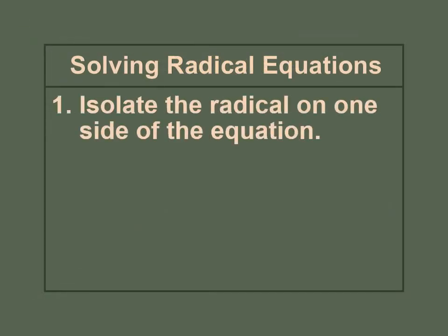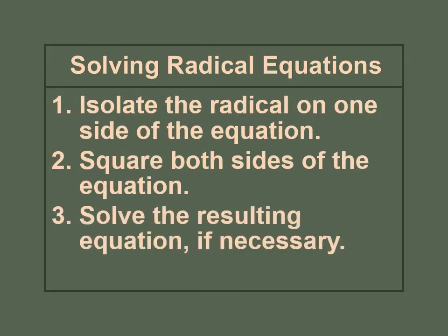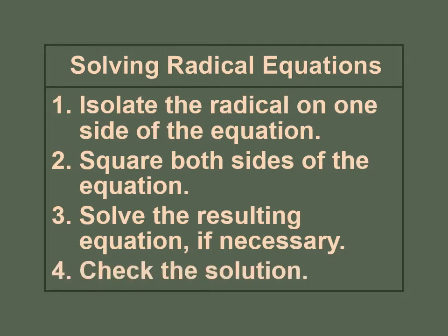Let's review the steps to solve a radical equation. Step 1: isolate the radical on one side of the equation — make sure your radical is by itself. Step 2: square both sides of the equation. Step 3: solve the resulting equation if necessary. Step 4: check the solution, because if you check it and get an incorrect answer, then the answer is actually no solution.